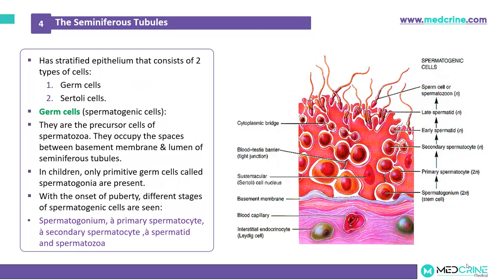The seminiferous tubules have a stratified epithelium consisting of two types of cells: the germ cells and the Sertoli cells. Germ cells are the main spermatogenic cells and are precursor cells of the spermatozoa, occupying the spaces between the basement membrane and the lumen. In children, only primitive germ cells known as spermatogonia are present, but with the onset of puberty, the different stages of spermatogenesis appear: spermatogonia (stem cell), primary spermatocyte, secondary spermatocyte, early spermatid, late spermatid, and finally a spermatozoon or mature sperm cell.